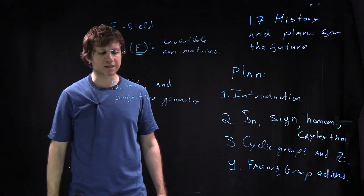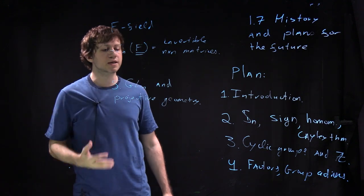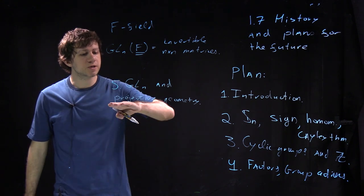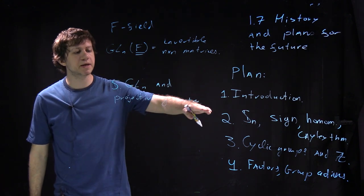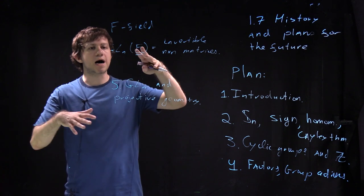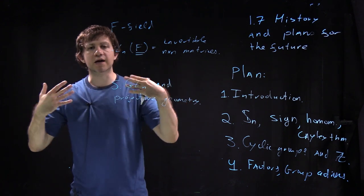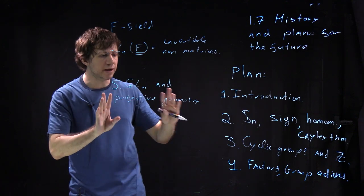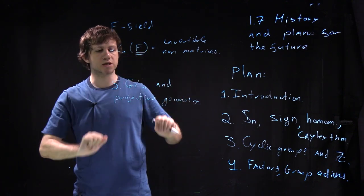And it happens that for instance for small n and small f there is a relations between these groups and symmetric groups which are called exceptional isomorphisms and stuff like that and we will discuss it somewhere here. And then we'll discuss some geometry related to it. Basically geometry of how linear maps and vector spaces act on lines. And there are amazing examples here again related to the small fields.